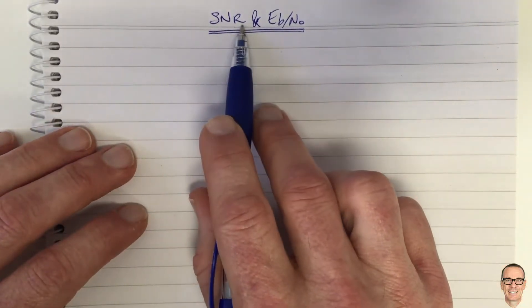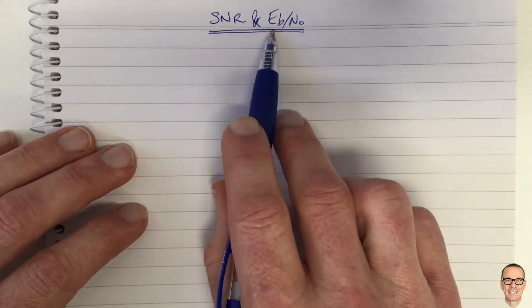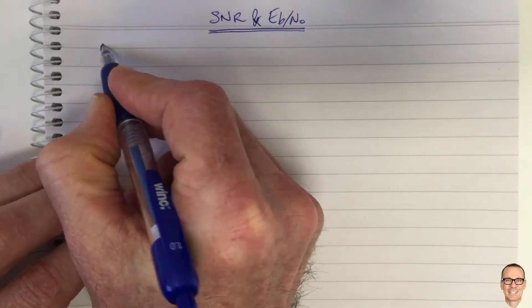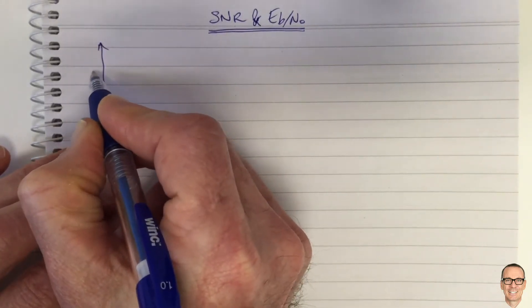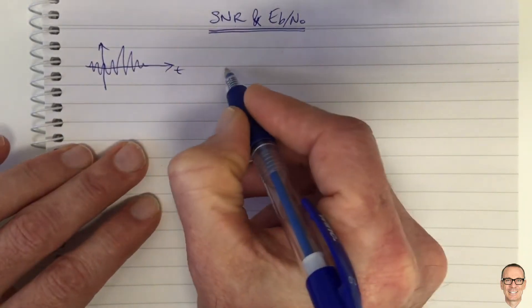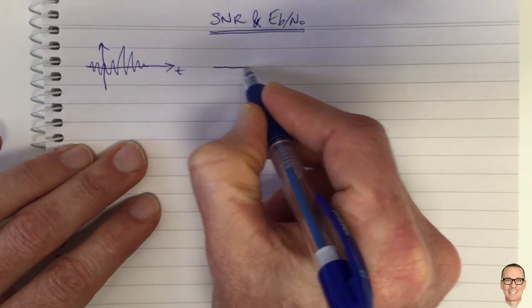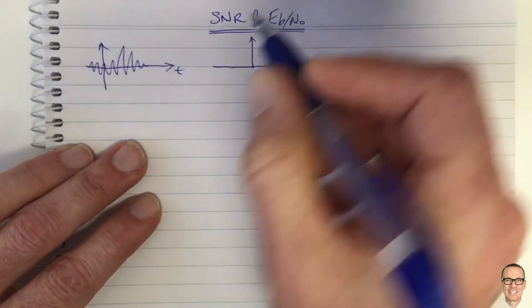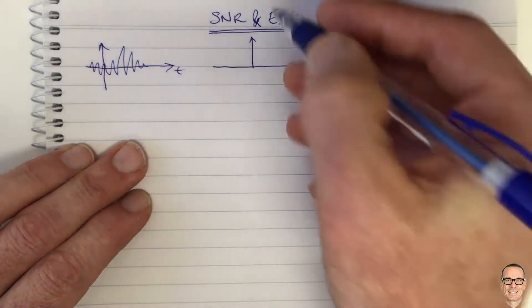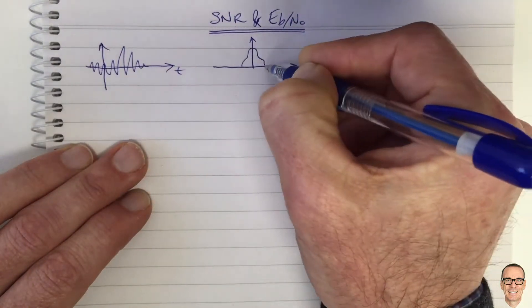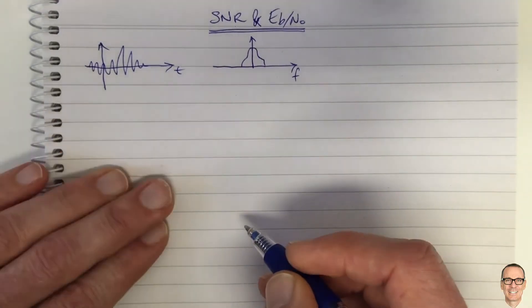Let's look at the difference between signal-to-noise ratio and Eb/N0. We're going to consider a time domain signal in baseband, which is for example the recording of my voice speaking, and we're going to look at that in the frequency domain as a power spectral density. Since it's a random signal, it has a power spectral density in the frequency domain.